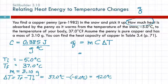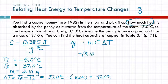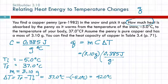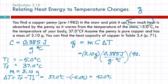I'm going to plug these numbers in. Always, always, always include the units. The mass: 3.10 grams. Specific heat capacity: 0.385 joules per gram times degrees Celsius. And the change in temperature: 42.0 degrees Celsius.